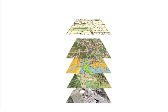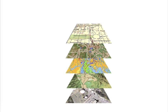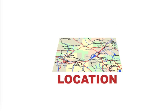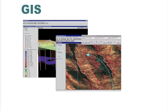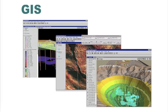A geographic information system uses computers and software to explore the fundamental principle of geography — that location is important in people's lives. GIS is used to inventory, analyze, and manage many aspects of the world.